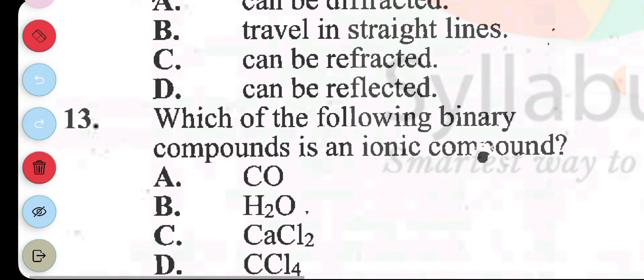Question 13: which of the following binary compounds is an ionic compound? A, carbon monoxide or CO. B, water. C, calcium chloride. D, carbon tetrachloride. The answer to question 13 is C.